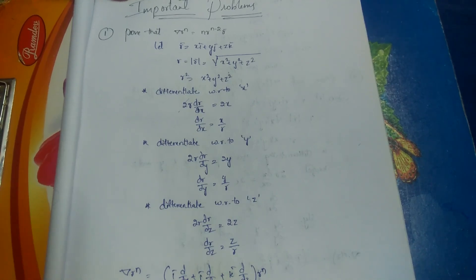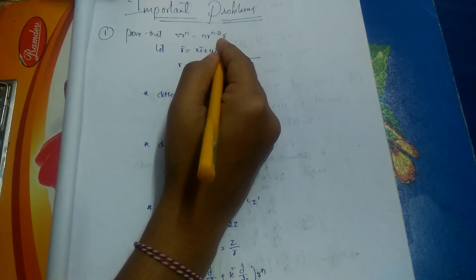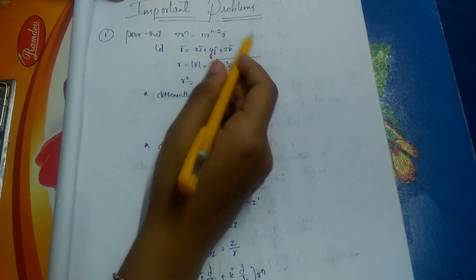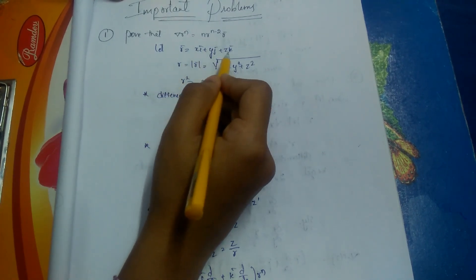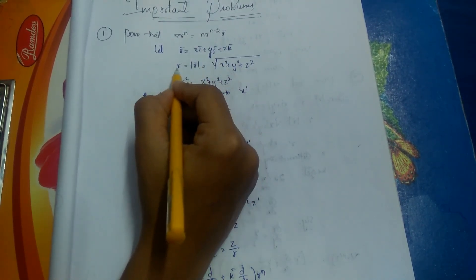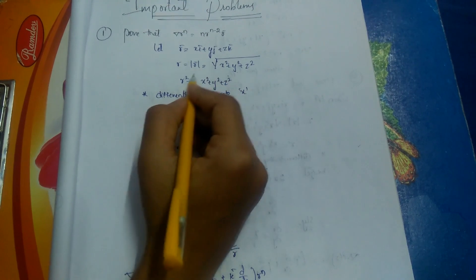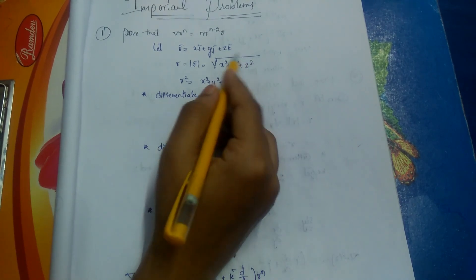We shall do some important problems. Prove that ∇(rⁿ) = n·r^(n-2)·r̄. We know that r̄ = x·ī + y·j̄ + z·k̄. When the r̄ vector is not mentioned, we assume it as x·ī + y·j̄ + z·k̄. The mod of r̄ can be written as r, which equals √(x² + y² + z²). Squaring both sides: r² = x² + y² + z².